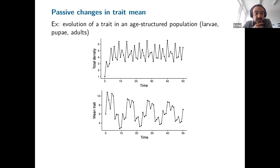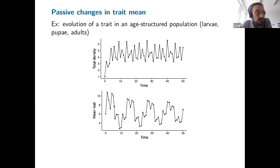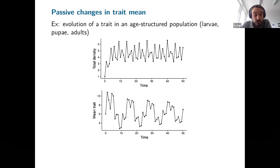This is a phenomenon that Alan Grafen termed 'passive change in trait mean.' Basically, if you see fluctuations in the mean trait in a population, some will be due to selection and some will be due to demographic transitions — which would happen even in a neutral population. Here's some simulated data of an age-structured population: the trait fluctuates over time, but in this simulated data the trait has no effect on the transition rates — it's completely neutral. So if we want to look at the effect of selection, we should see no fluctuations; what we see is the result of demographic transitions.